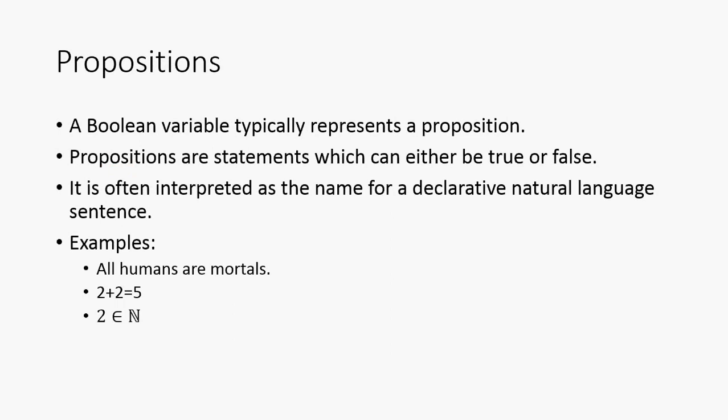Okay. So, next we have propositions. A Boolean variable typically represents a proposition. And a proposition is a statement which can either be true or false. It's often interpreted as the name for a declarative natural language sentence. So, for example, all humans are mortal. This is a proposition. 2 plus 2 equals 5 is a proposition. It's a false one, but it's a proposition. And then, 2 is an element of the natural numbers. That is also a proposition.